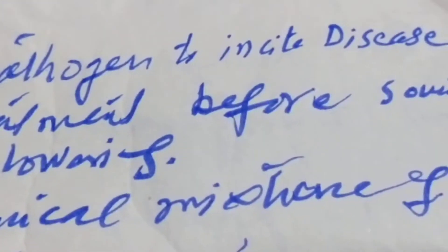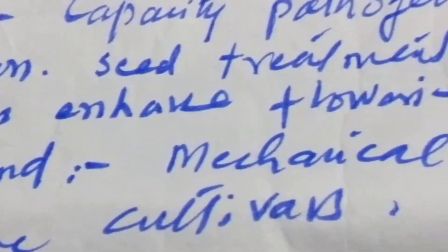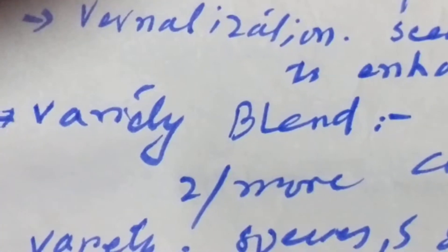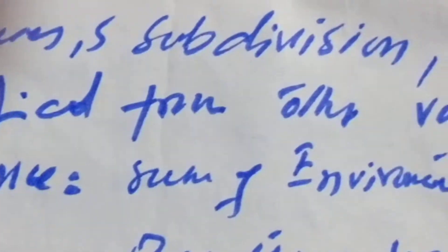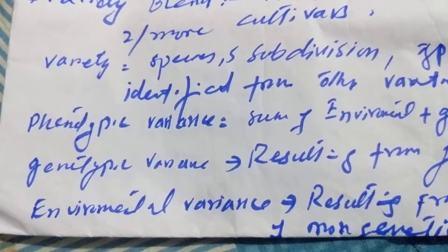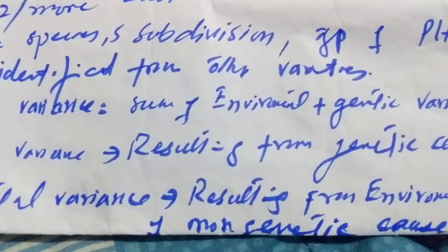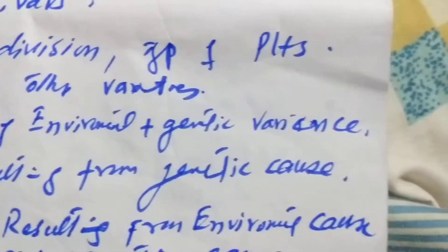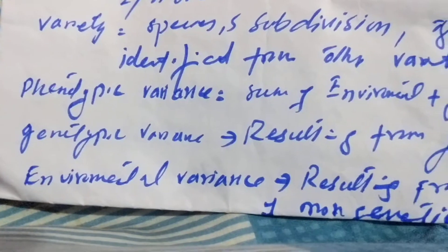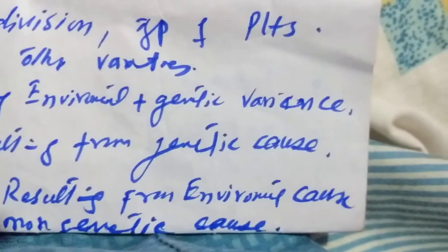Variety blend is a mechanical mixture or mixing of two or more cultivars. Variety is a species subdivision — a group of plants identified from other varieties. Phenotypic variance is the sum of environmental and genetic variance, whereas genotypic variance is the result from genetic cause.